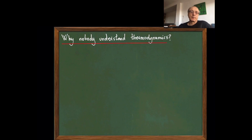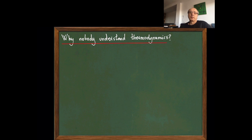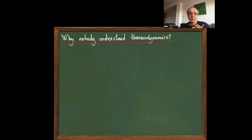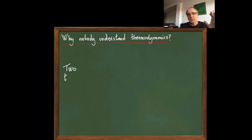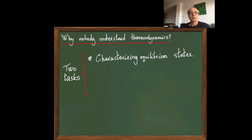Hello. This is a video intended mostly for students or physicists—people who have studied thermodynamics or are studying thermodynamics but are not understanding it completely. One of the problems of many textbooks and courses on thermodynamics is that they are based on the first law and the second law. This is a historical approach, but nowadays it doesn't make as much sense, or we can present thermodynamics in a more coherent way. The problem with the historical approach is also that it mixes two different tasks that equilibrium thermodynamics tries to address, and it's important to distinguish between these two different problems.